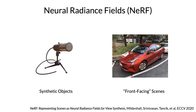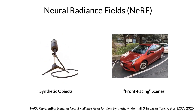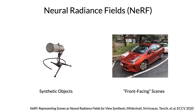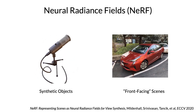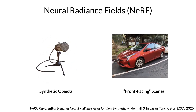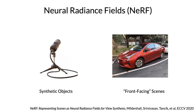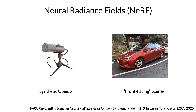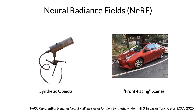Neural radiance fields are a very effective way to view synthesis, and NERF really excels in two constrained settings which were explored in the first NERF paper. These are synthetic objects without any background viewed from all angles, and real-world scenes where the camera is always facing the same direction.